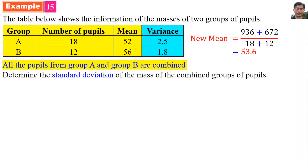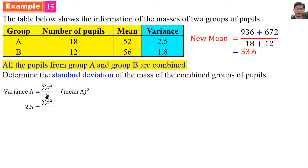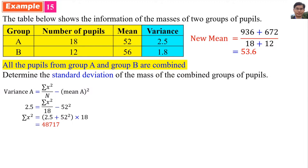Now we find the new variance. Variance A equals summation x² per n minus mean A squared. Variance A is 2.5, n for A is 18, and mean A is 52. So summation x² for Group A is (2.5 + 52²) multiplied by 18.